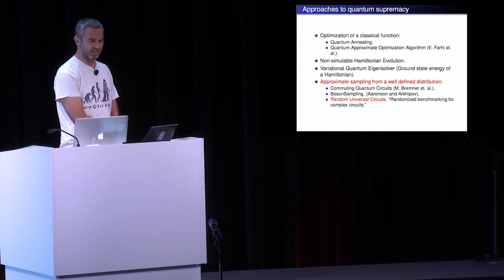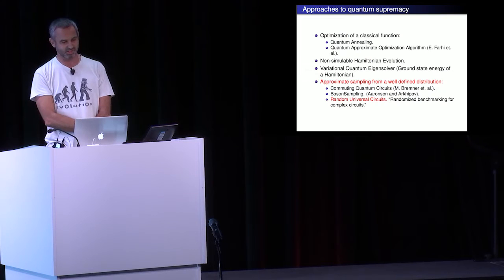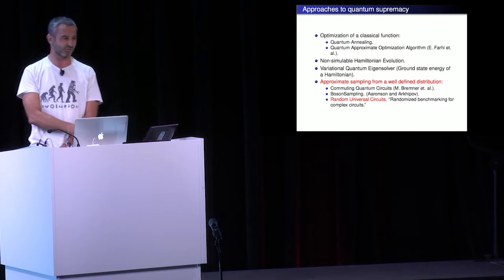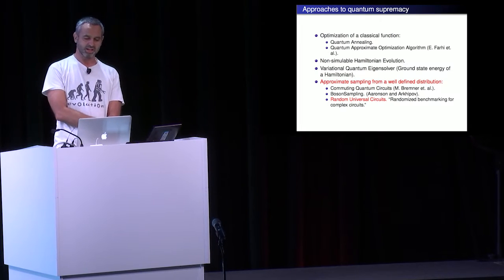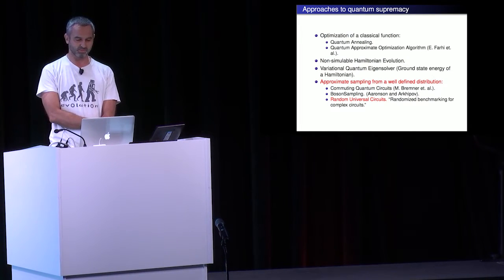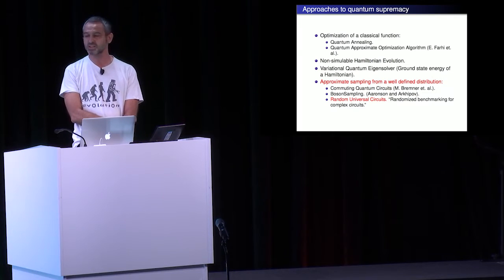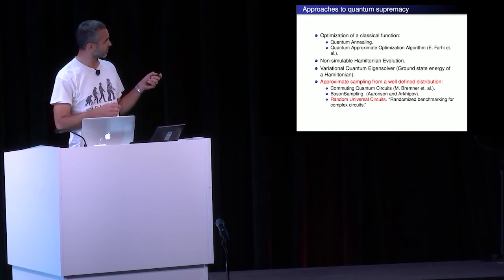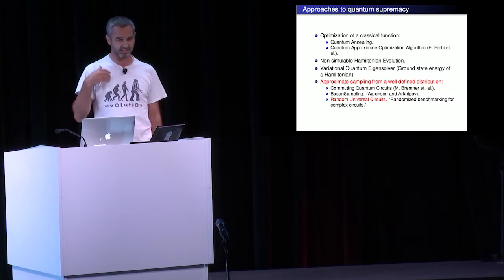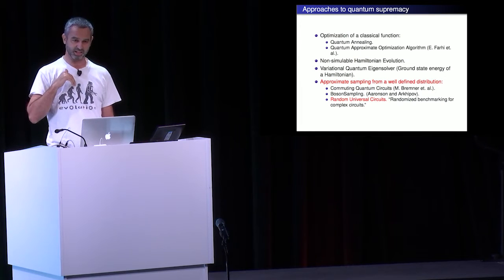There are several approaches to try to do this. One of them is the optimization of a classical function — quantum annealing, which is what this conference is about. Also related to that, but not the same, is the algorithm by Eddie and collaborators: the quantum approximate optimization algorithm. Here you would like to achieve quantum supremacy by finding a lower minimum of some classical cost function with a quantum device — a lower minimum than you could find with a supercomputer.